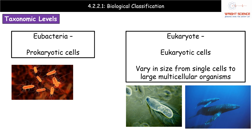Our second domain is the eubacteria. These are prokaryotic cells — pretty much the bacteria you commonly think about, such as E. coli and salmonella. Our final domain is the eukaryotes. These are eukaryotic cells and a very diverse group, ranging from single-celled organisms like euglena all the way up to large multicellular organisms like blue whales. The key thing is that they are made of eukaryotic cells, and therefore they have a nucleus.